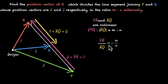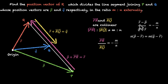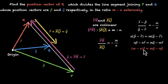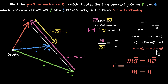Cross multiplying: pr equals r minus p, rq equals q minus r, and their ratio equals minus m by n. So n times (p vector minus r vector) equals m times (q vector minus r vector). Expanding: np minus nr equals mq minus mr. Bringing all r's together: (m minus n) r vector equals mq minus np. Therefore r vector equals (mq vector minus np vector) divided by (m minus n). For internal division we had plus signs; for external division we have minus signs. This completes the derivation of the section formula for vectors.